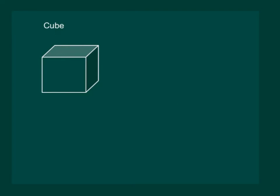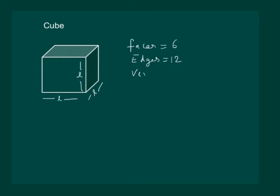Let us consider this cube. We can see that it is very similar to the cuboid, only with the difference that length, breadth and height are the same. So all sides are equal, meaning length equals breadth equals height. A cube also has six faces, twelve edges and eight vertices. The lateral surface area of the cube is 4L squared and the total surface area is 6L squared.